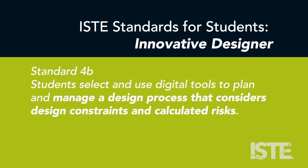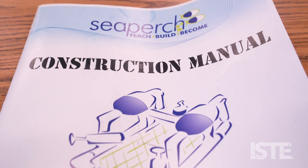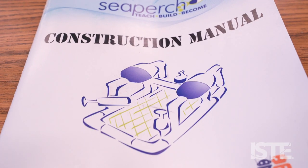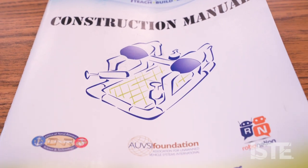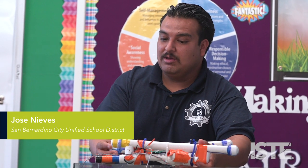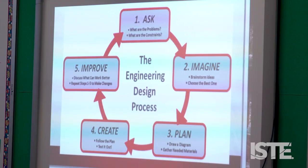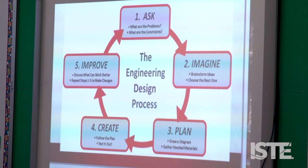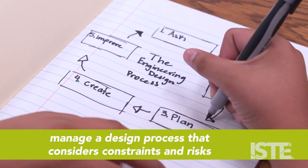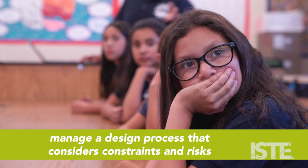Students select and use digital tools to plan and manage a design process that considers design constraints and calculated risks. When I first started with CPIRG, I actually used the scientific method, which was successful. But once I learned more about the EDP, which stands for Engineering Design Process, I followed the cycle of how they would make the whole product work.